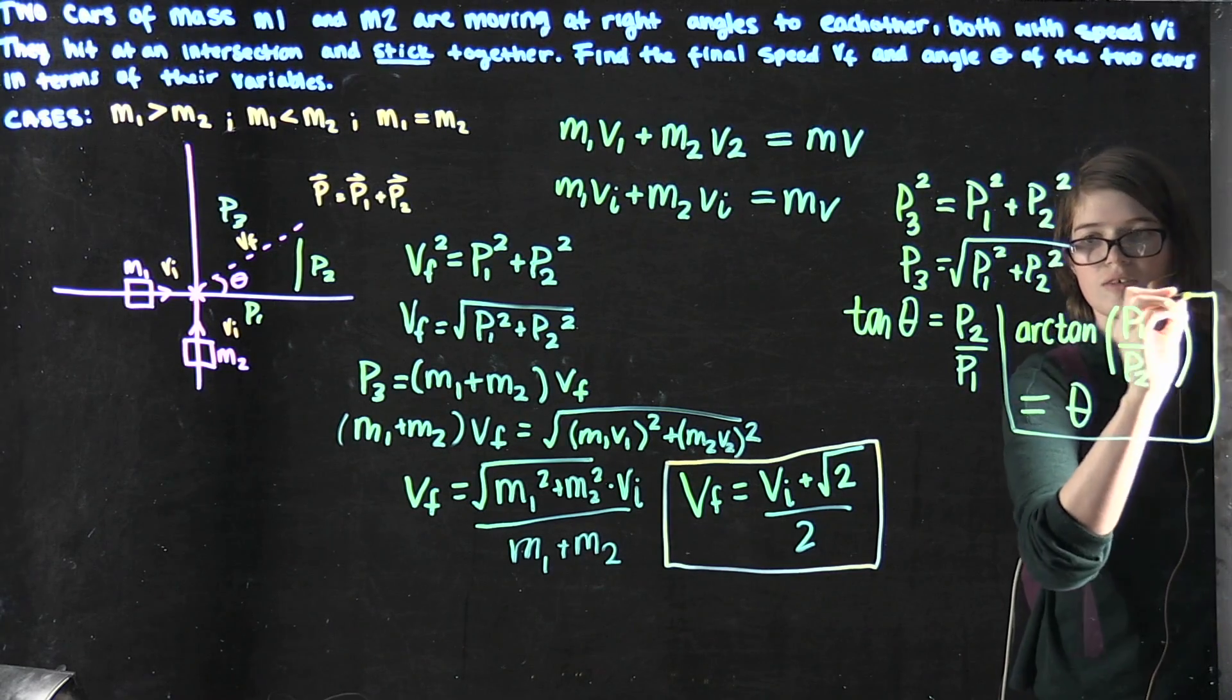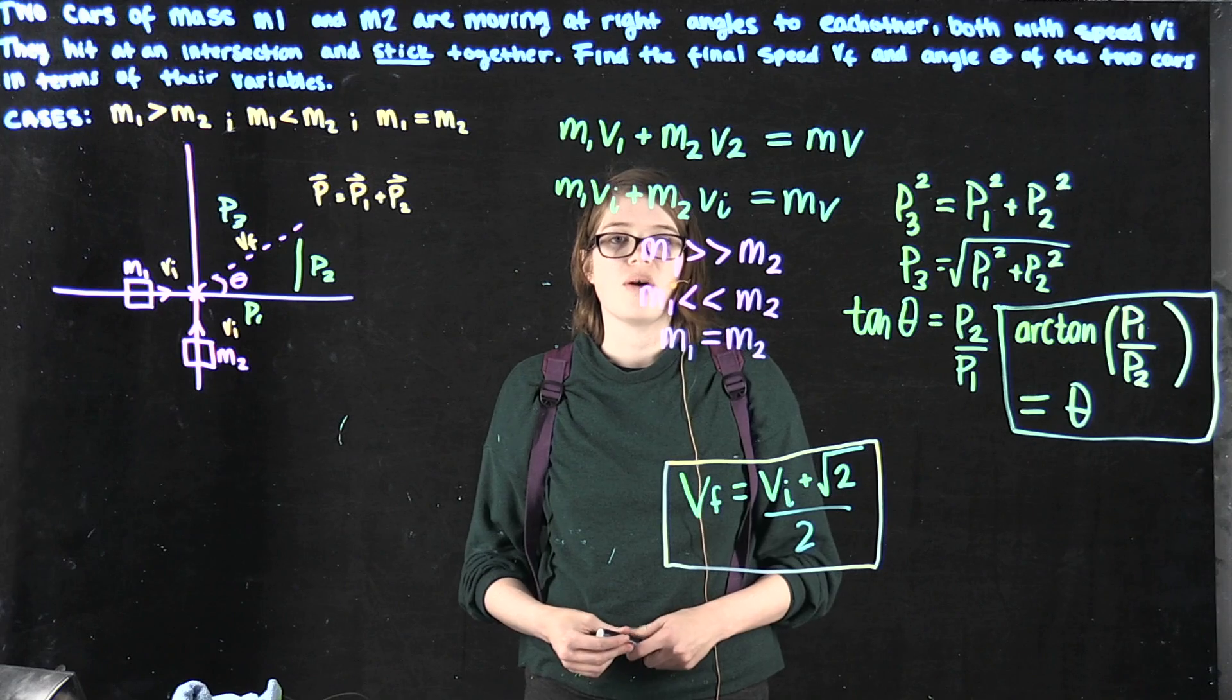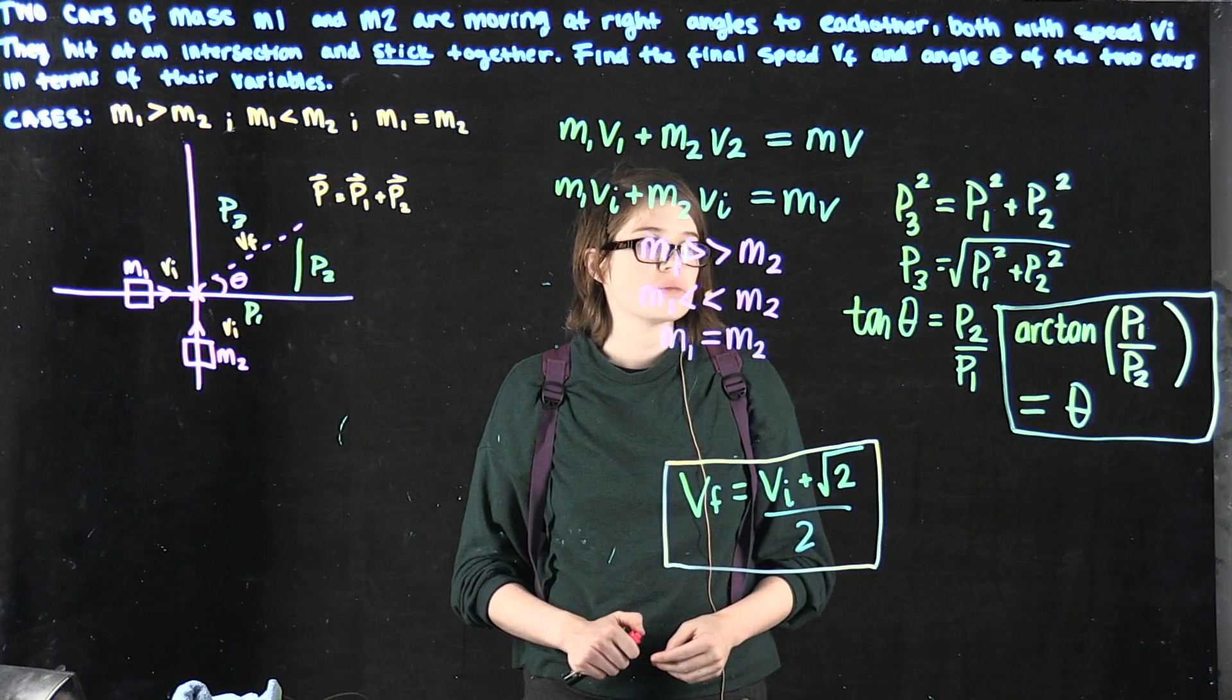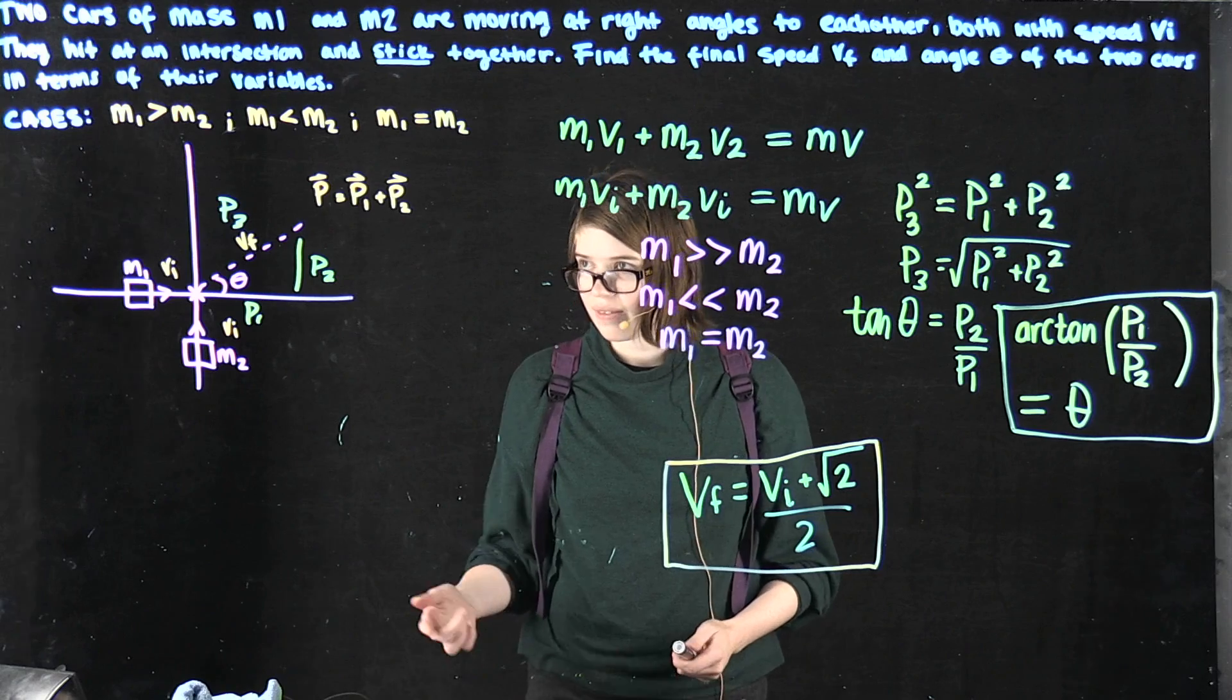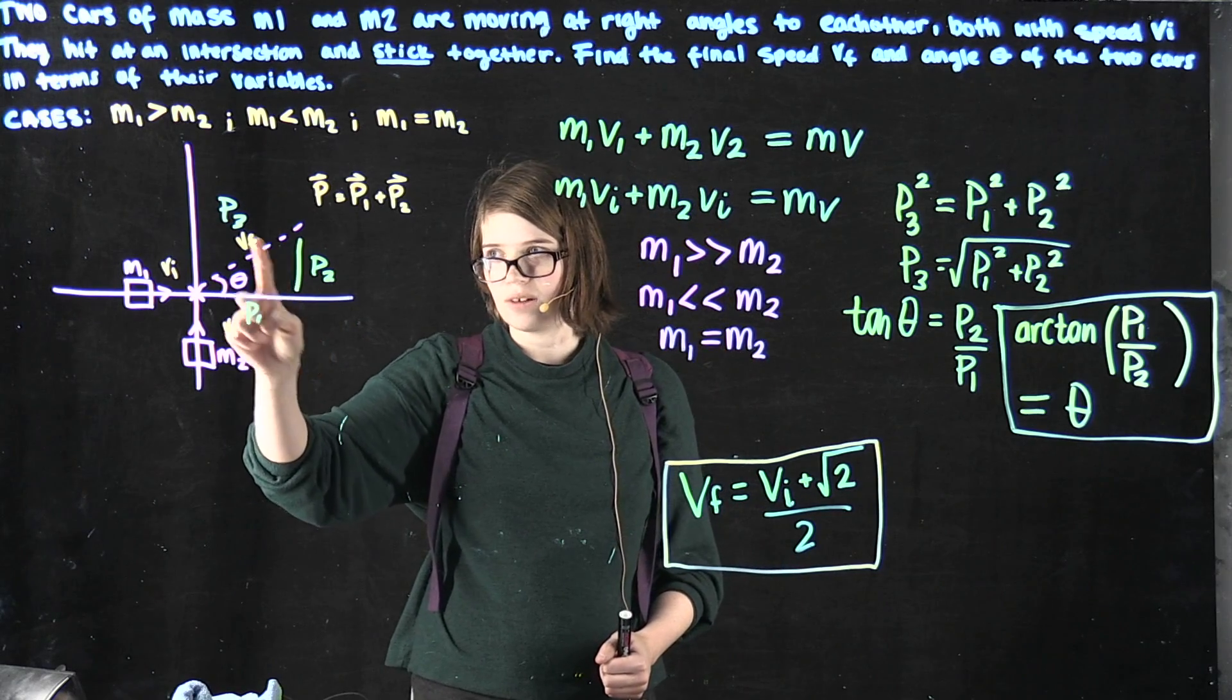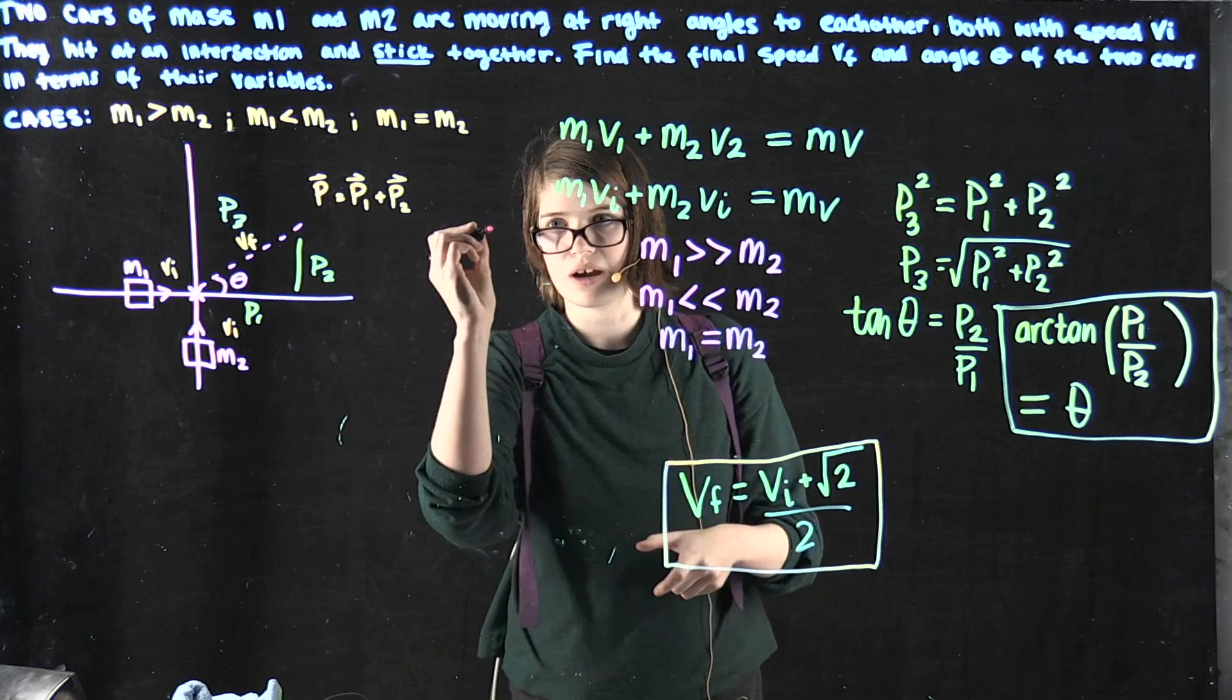That's our second value in terms of our equations. For our first case, where m1 is greater than m2, when there's a larger number over a smaller number, we get a number greater than 1. Because of our overall values and the definition of our right triangle, theta in this case is going to be greater than 45.